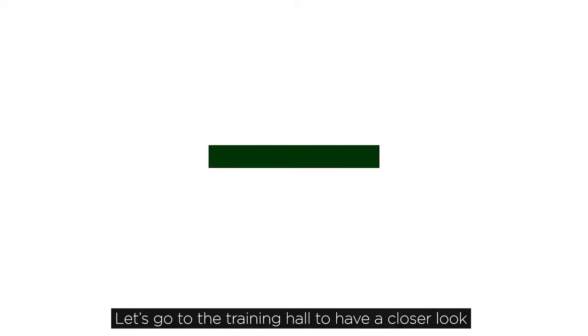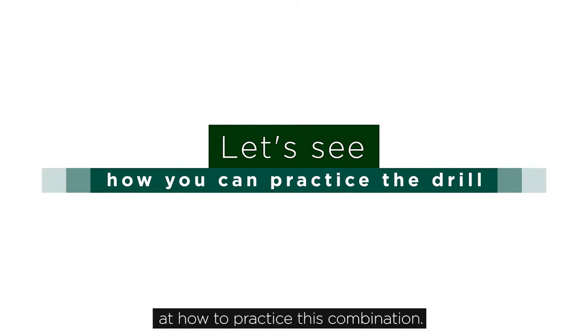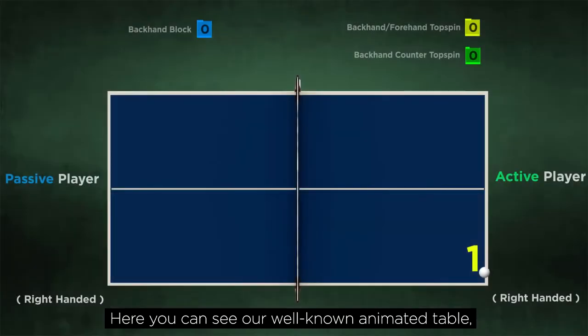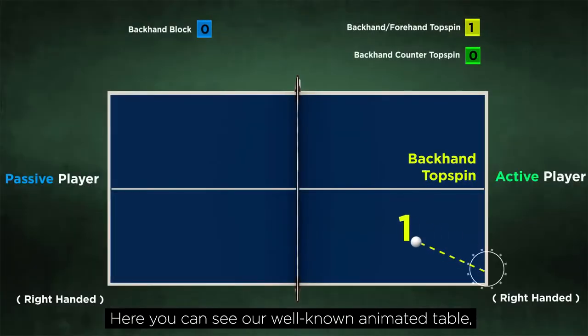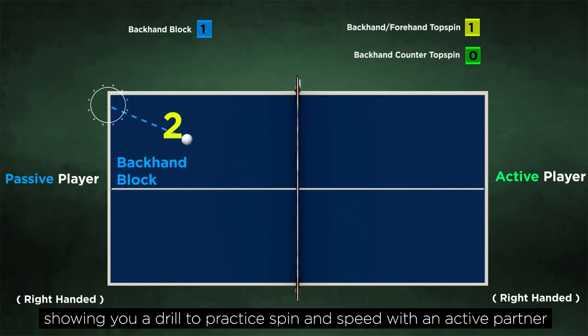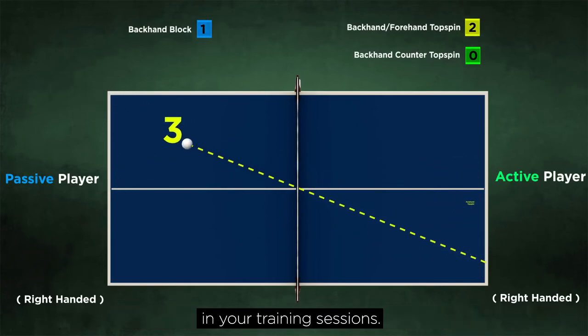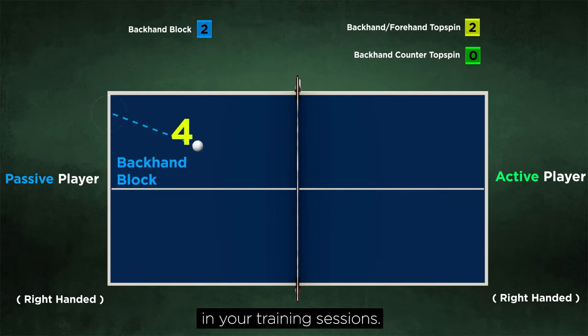Let's go to the training hall to have a closer look at how to practice this combination. Here you can see our well-known animated table showing you a drill to practice spin and speed with an active partner in your training sessions.